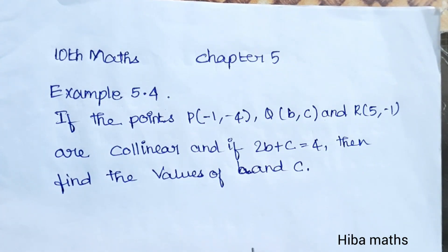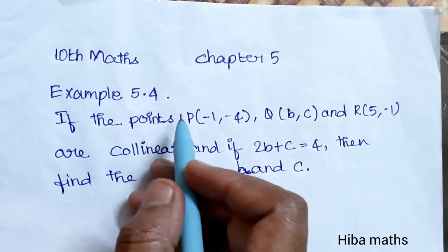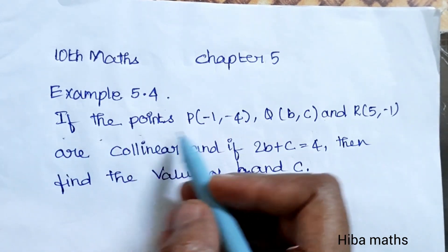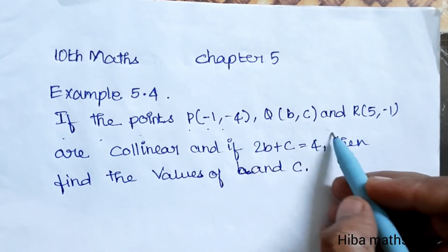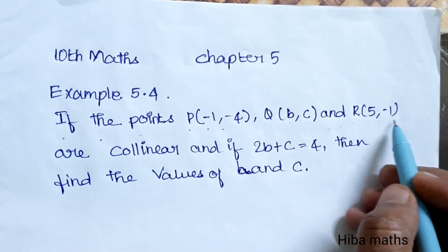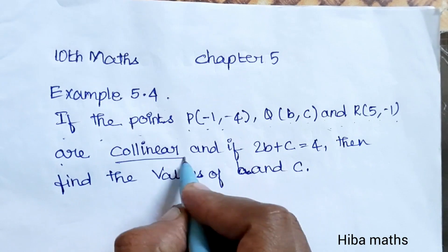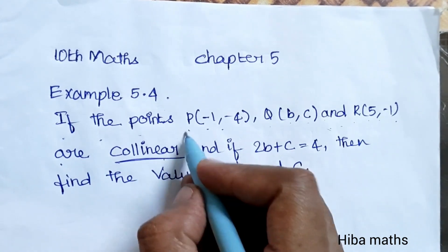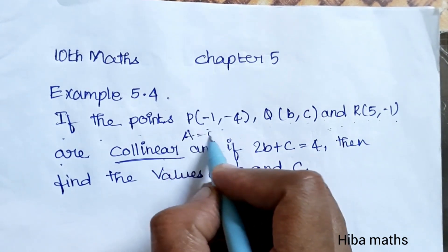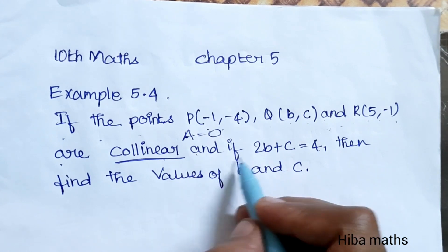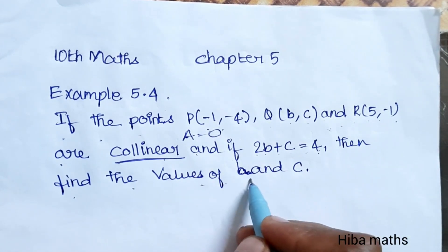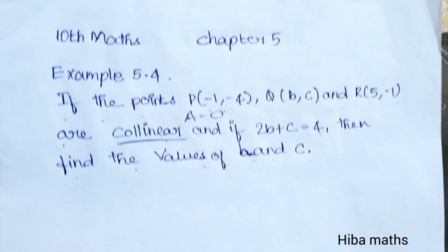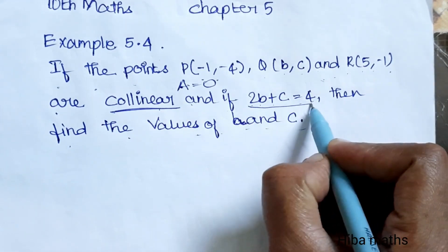Hello students, welcome to Hiba Max 10 standard. Chapter 4, Example 5.4: If the points P(-1, -4), Q(b, c) and R(5, -1) are collinear, then the area is equal to 0. And if 2b plus c is equal to 4, then find the values of b and c.